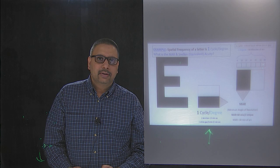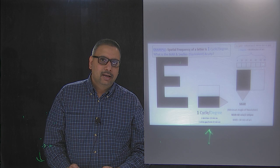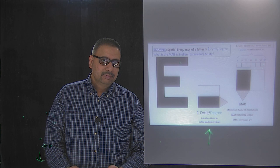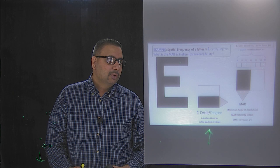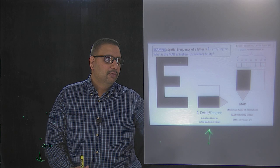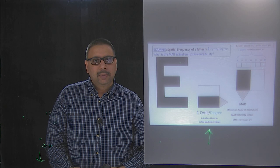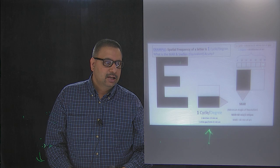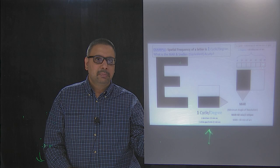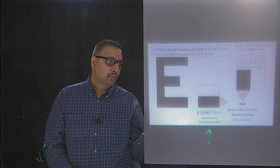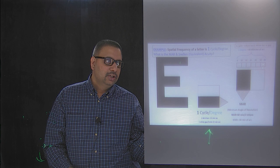This letter E is approximately equal to 1 cycle per degree. When asking for MAR given spatial frequency of 1 cycle per degree, they're asking for the width of each black and white bar. With 1 cycle, you have 1 black bar and 1 white bar. Fitting 1 black and 1 white bar into 60 minutes, each one is approximately 30 minutes of arc. So the MAR is 30 minutes of arc.